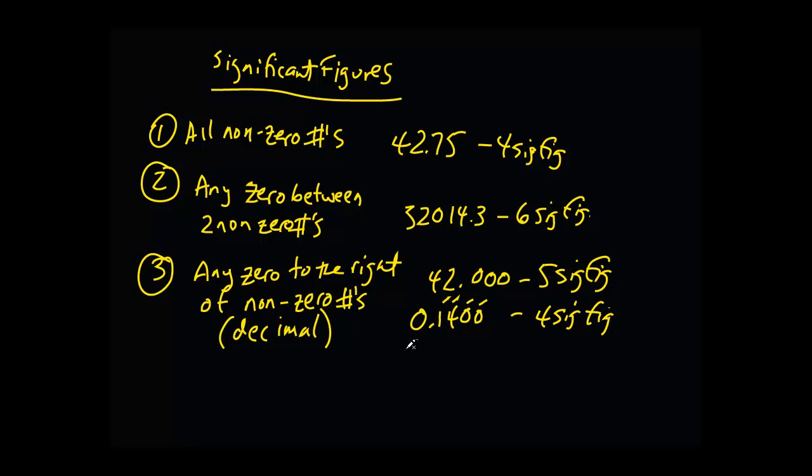It also means that if we have a number like 0.0027100, we have one, two, three, four, five significant figures. Why aren't these zeros significant here and here? Well, they're to the right of the decimal but they're also to the left of these non-zero numbers. So these zeros aren't significant. Any group of zeros to the left of non-zero numbers are not significant as long as the decimal is present.